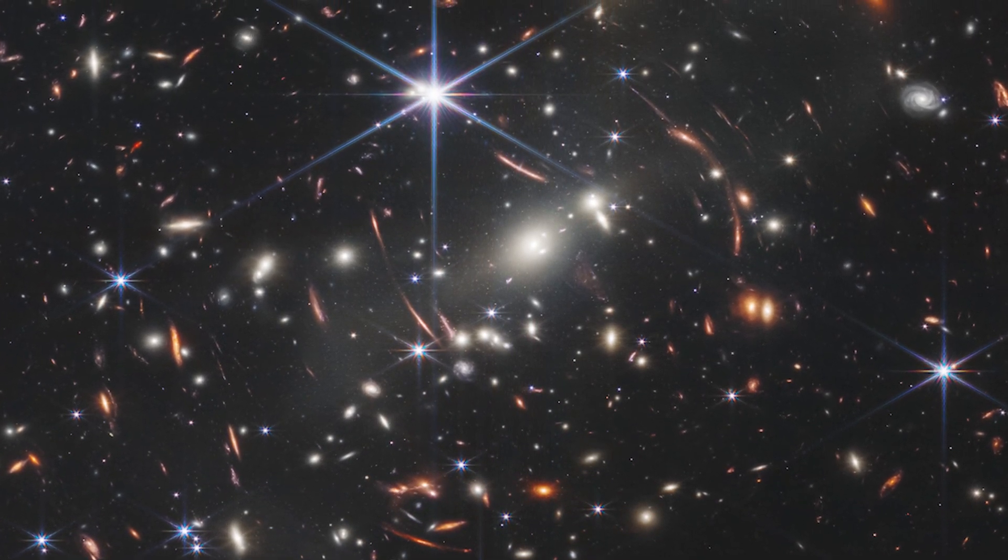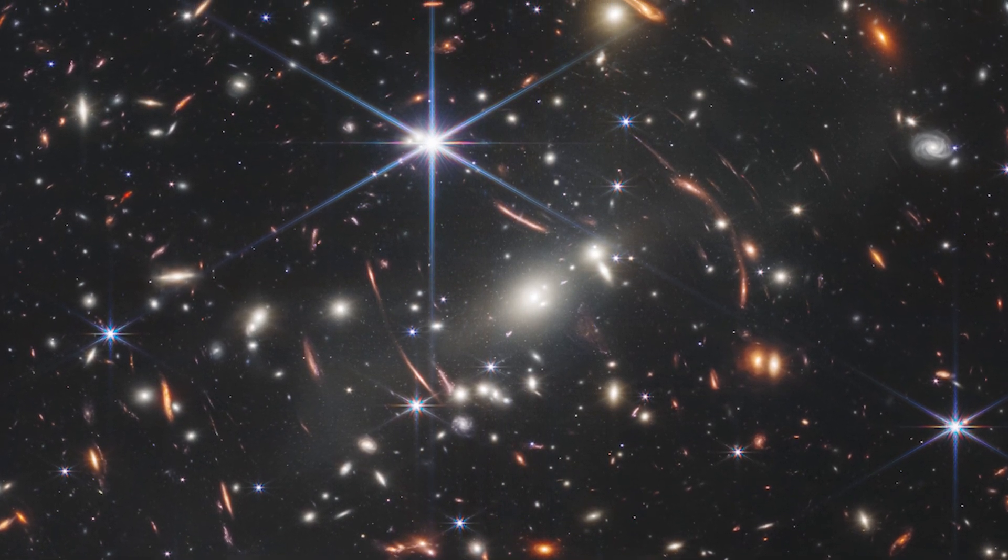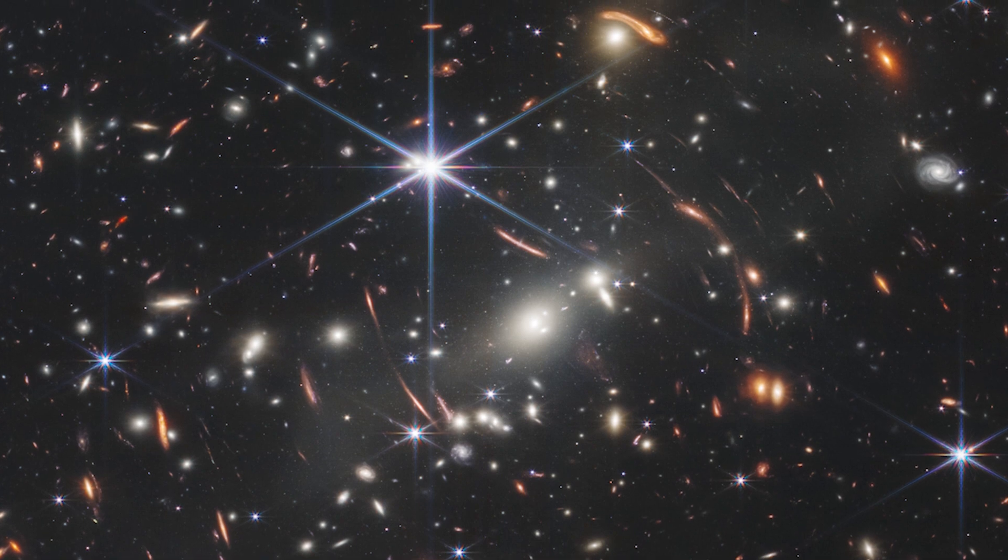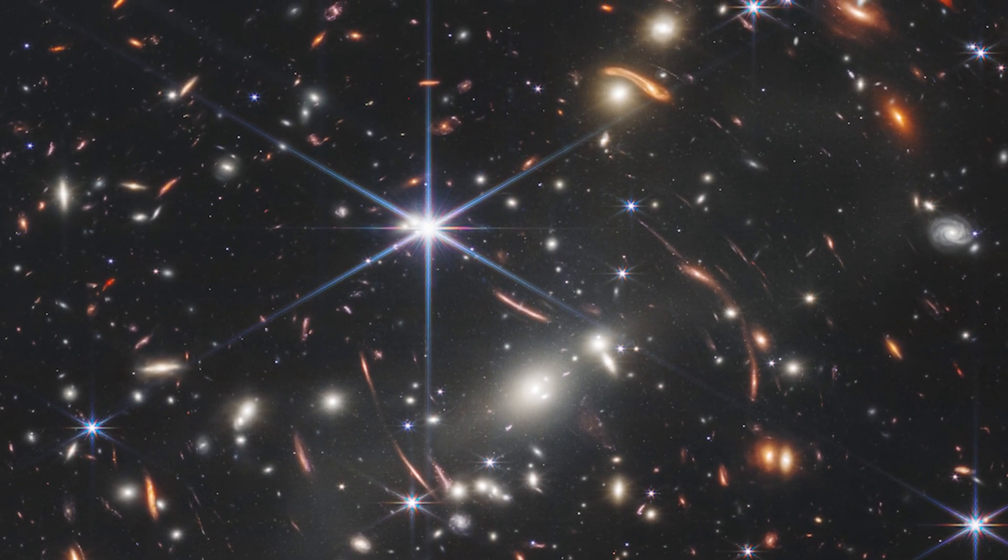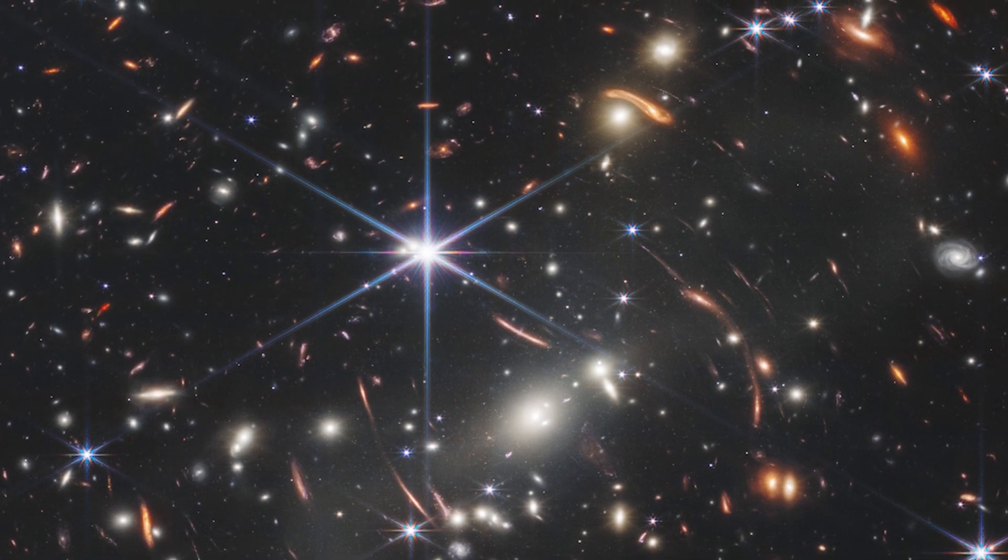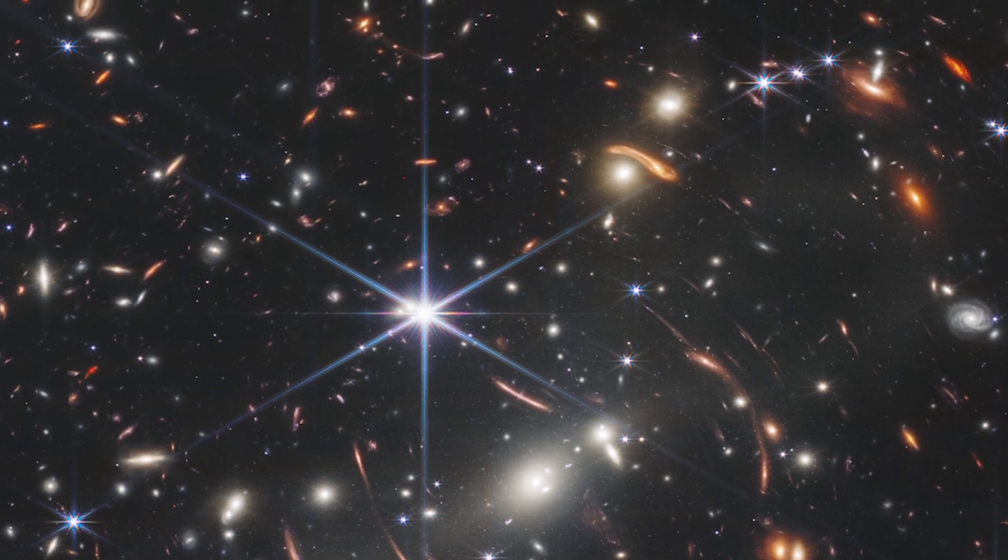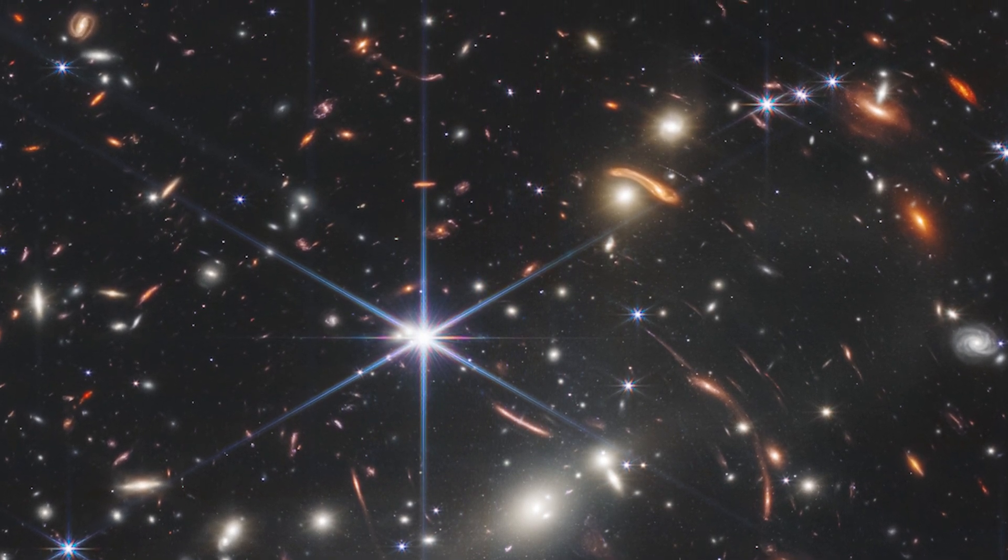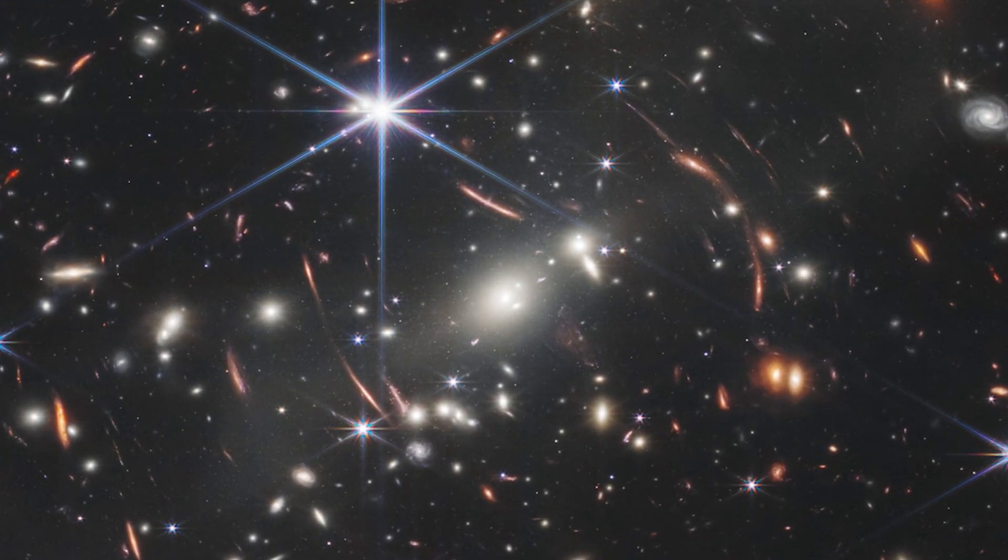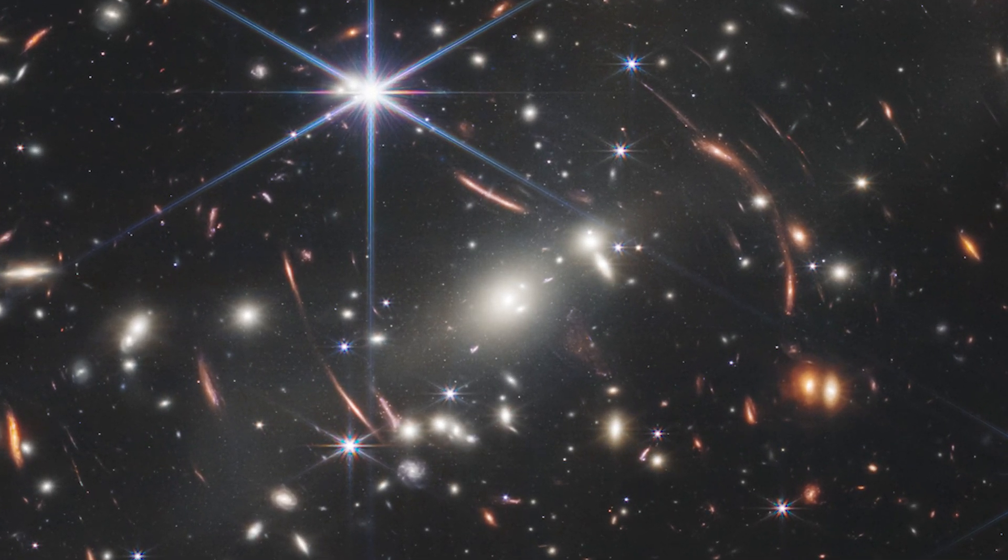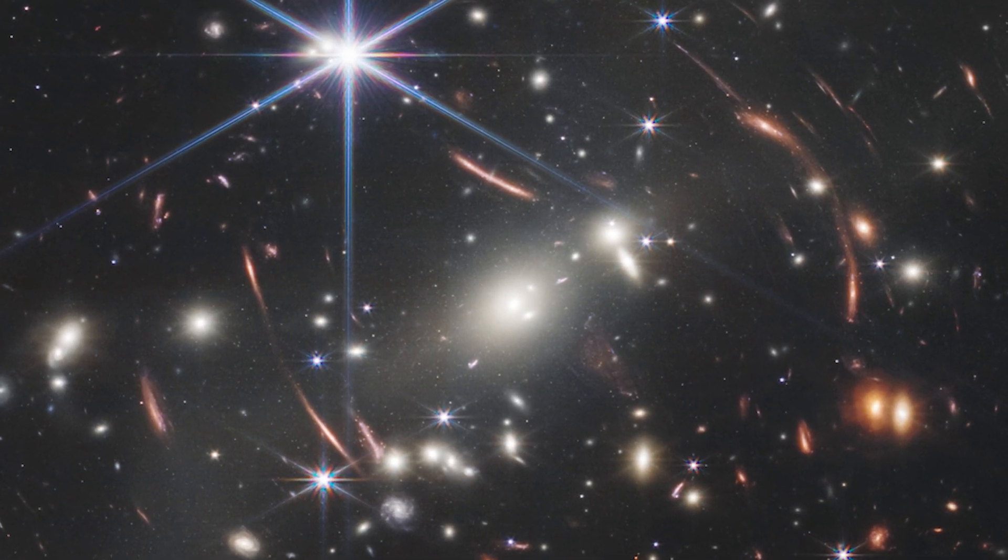This picture of the galaxy cluster is rich with information. Thousands of galaxies, including the tiniest infrared objects yet detected, have emerged in Webb's perspective for the first time. This deep field picture was captured by Webb's near-infrared camera and is a composite of photos collected at multiple wavelengths. Because light takes 4.6 billion years to reach us, we see 4.6 billion light-years into the past. This galaxy cluster's combined mass works as a gravitational lens, amplifying considerably more distant galaxies behind it.